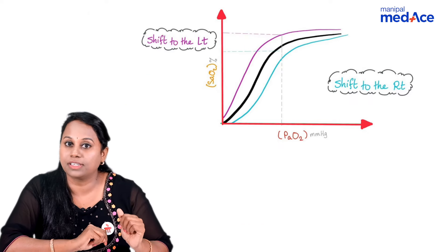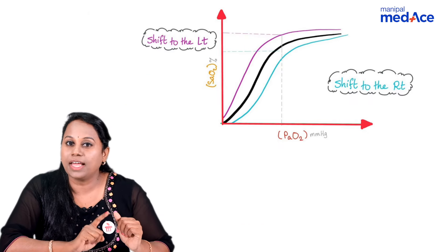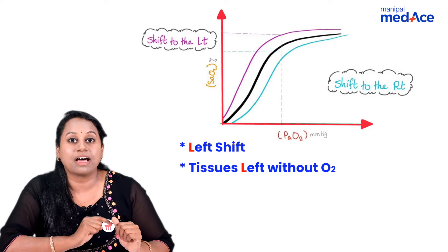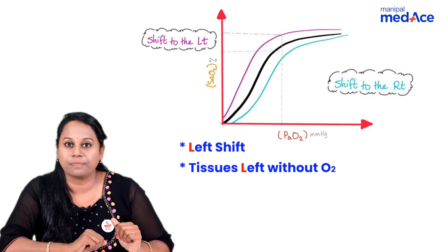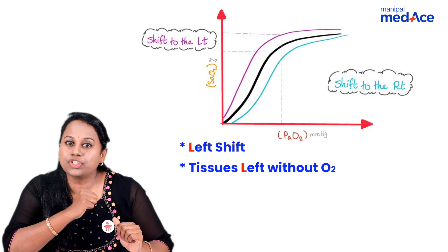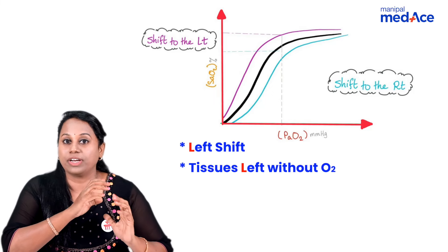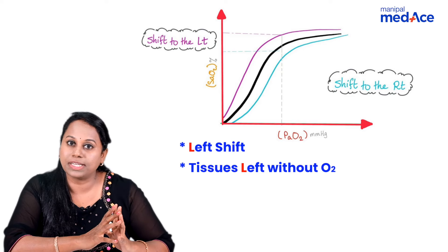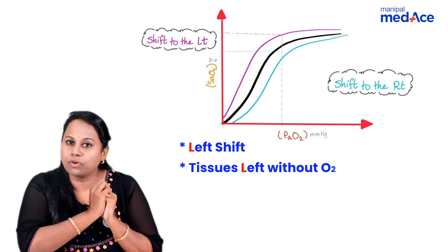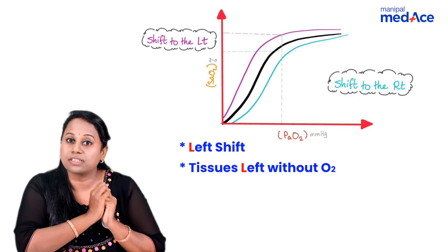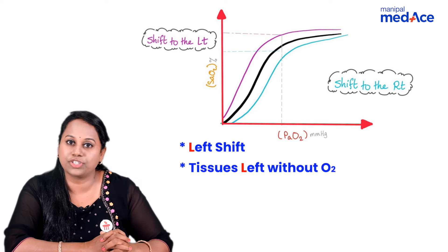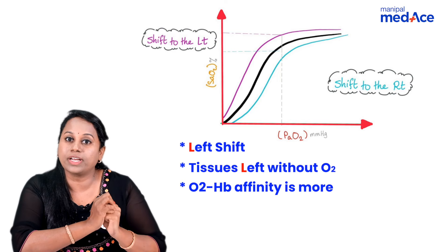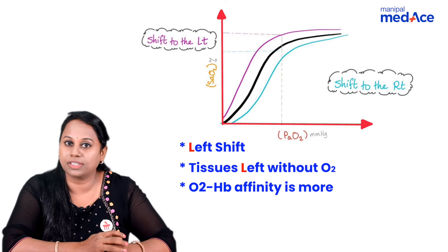Left shift of the curve — L for left shift, L for tissues are left without oxygen. When will the tissues be left without oxygen? When all oxygen is with hemoglobin itself. Hemoglobin is holding all the oxygen and not giving the oxygen to the tissues. So, oxygen-hemoglobin affinity is more in left shift of the curve.